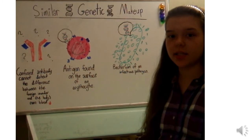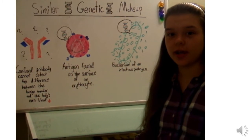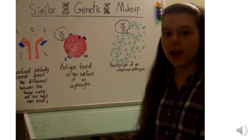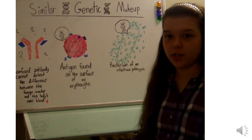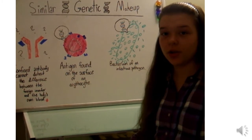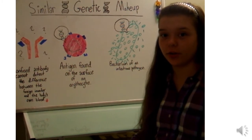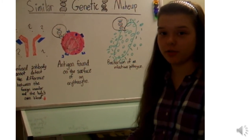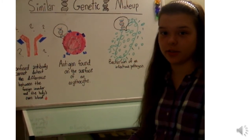My theory behind this is that certain antigens of certain blood types have a gene translocation, extra copy, or a different gene altogether, which can both lower and raise the risk of certain illnesses.